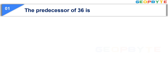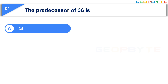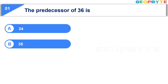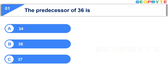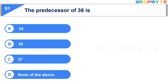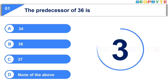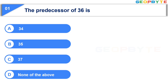The first question is: The predecessor of 36 is. Option A: 34. Option B: 35. Option C: 37. Option D: None of the above. Your time starts now. Your time is up and the correct answer is Option B: 35.